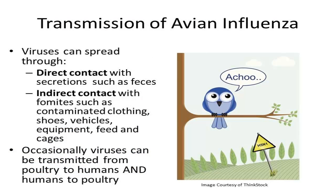Apart from bird-to-bird spread of the virus, avian influenza viruses are readily transmitted by indirect contact with fomites, such as contaminated shoes, clothing, vehicles, equipment, feed, and cages. Highly pathogenic viruses can survive for long periods of time in the environment and on contaminated objects, especially when temperatures are low.